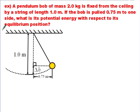Here's the problem I'm going to go through with you. A pendulum bob has a mass of 2 kilograms, and it's fixed from the ceiling by a string of length 1 meter. If the bob is pulled 0.75 meters to one side — here I'm pulling it to the right — what is the potential energy with respect to its equilibrium position? The equilibrium position is down at the bottom, where the pendulum eventually comes to rest as friction slows it down.